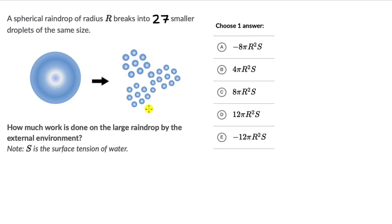Let's solve a question on surface energy and one on surface tension. For the first one, we have a spherical raindrop of radius R which breaks into 27 smaller droplets of the same size. How much work is done on the large raindrop by the external environment? S is the surface tension of water.